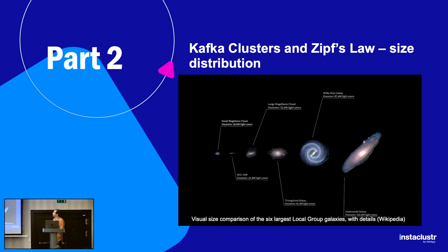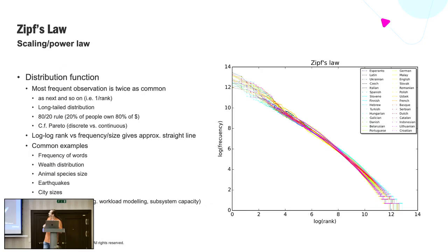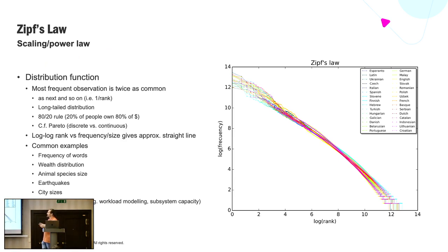Part two — Kafka clusters and Zipf's Law. This is about the size distribution of something, for example galaxies, which come in different sizes from relatively small up to enormous. Zipf's Law is a scaling power law, a distribution function where the most common or most frequent observation is twice as common as the next, and so on — it's one divided by the rank. It's a long tail distribution, similar to the 80-20 rule: 20% of the people own 80% of the money. It's similar to the Pareto distribution.